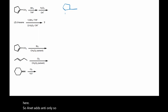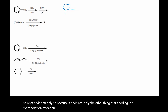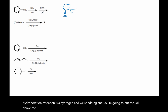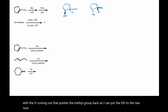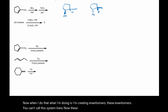Because it adds anti-only, the other thing adding in a hydroboration oxidation is a hydrogen. We are adding anti, so I'm going to put the OH above the ring and the H coming out. That pushes the methyl group back and I can put the OH to the rear. When I do that, I'm creating enantiomers. You can't call this cis and trans — you're going to need to declare these R and S.